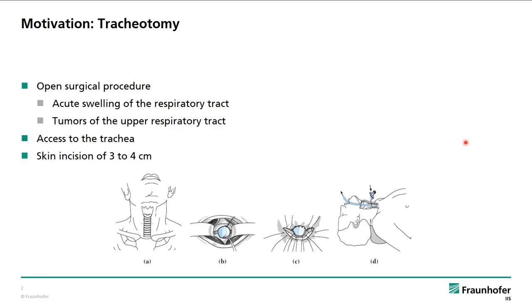The tracheotomy is an open surgical procedure used for acute swelling of the respiratory tract or tumors of the upper respiratory tract. The physician wants to access the trachea. The first step is to cut between the 2nd and 3rd, or between the 3rd and 4th tracheal cartilages. After that, the physician opens the cut and dissects the skin down to the trachea. The last step is to insert a cannula.